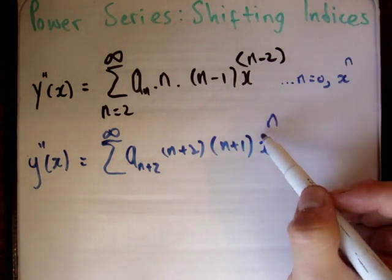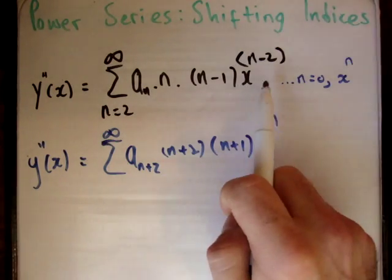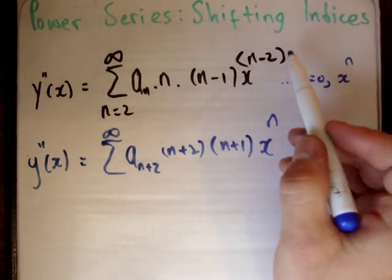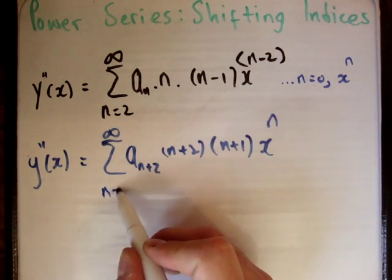So now I have my x to the n. And where you increase the power here, you must decrease the order. Where you increase the power, you must decrease where it begins. So this begins at n equals 0 now.